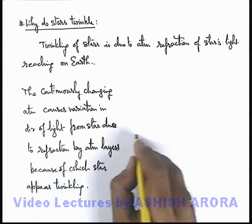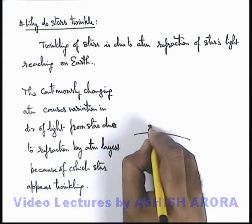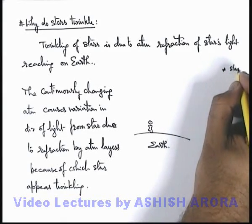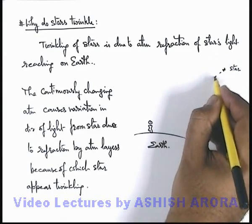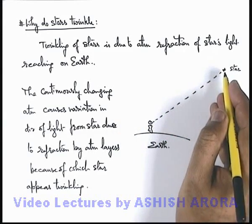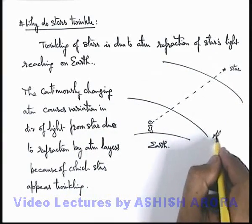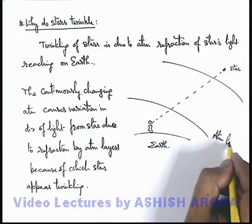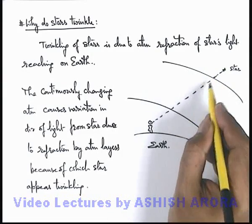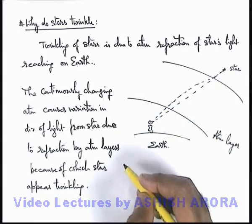Here we can understand the concept like this: on Earth, if there is an observer who is looking on to a distant star, if the light is directly reaching to the eye of the observer from the star, it will appear at a fixed position. But in between there are atmospheric layers, and due to these atmospheric layers the light of the star which enters into the atmosphere bends and reaches to the observer's eye.